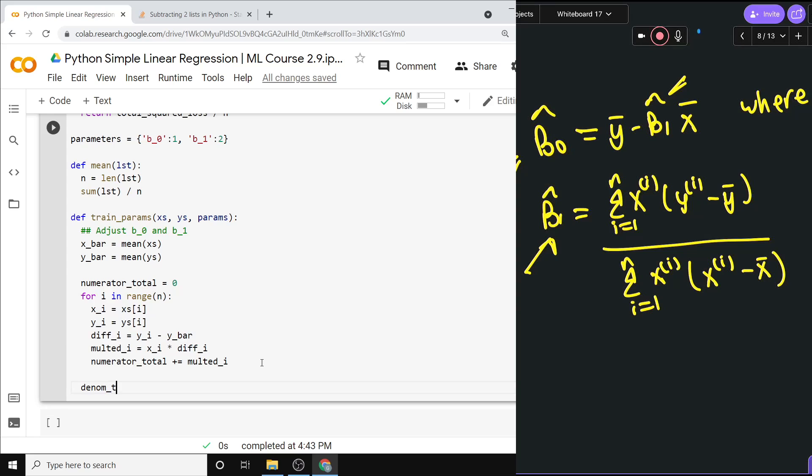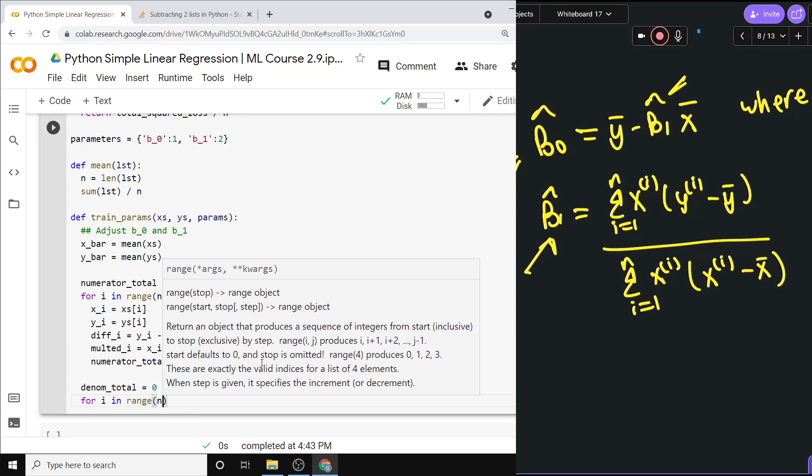We can easily get the denominator_total, which I'll just write denom_total equals zero. And then here we need—it's just to do with the x's—so it's xi and then xi minus x_bar. There's many different ways of writing this, this is just the one that I found. So we can do for i in range of n.